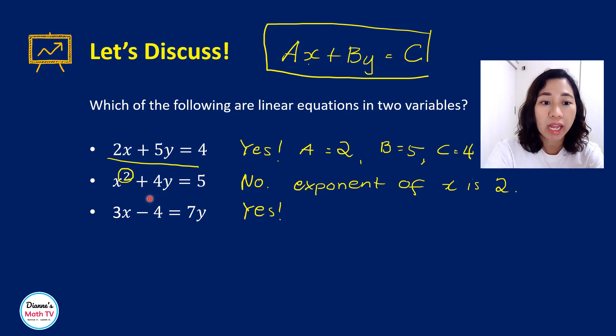So I will just transpose 7y on the other side and put negative 4 on the other side. So in this case, it will become 3x. Remember, I'm transposing. So positive 7y will be minus 7y is equal to, and then the negative 4 there, I want to put it on the other side. It will now become positive 4.